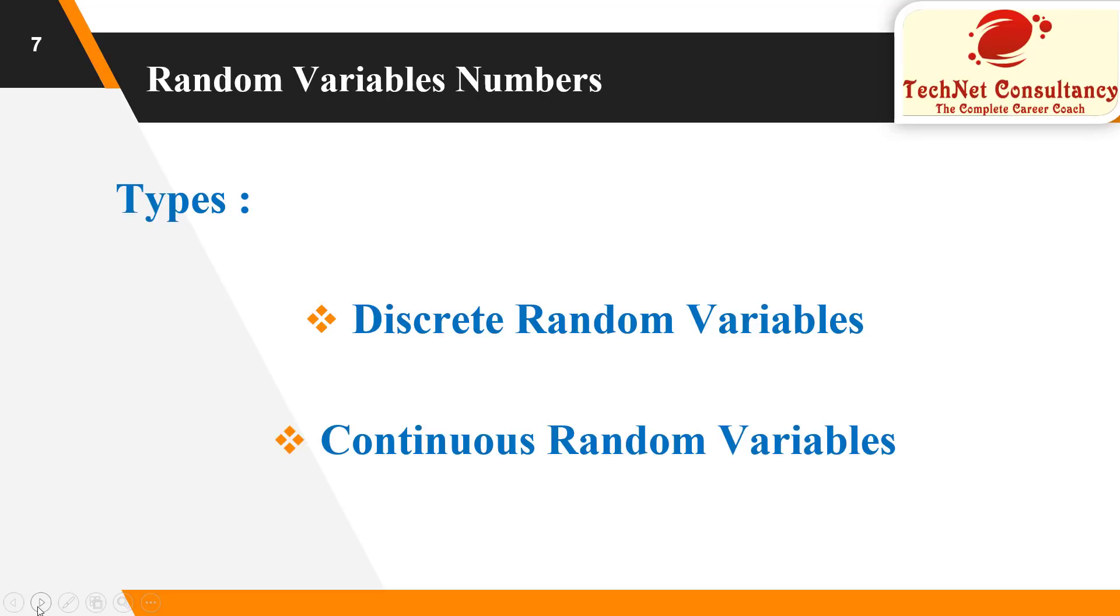In random variable numbers, we are having two categories, which is discrete random variable numbers and continuous random variable numbers.